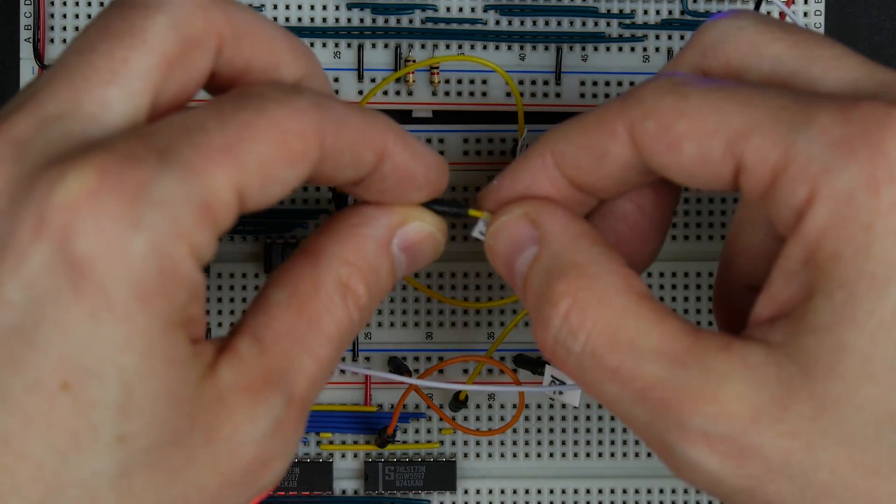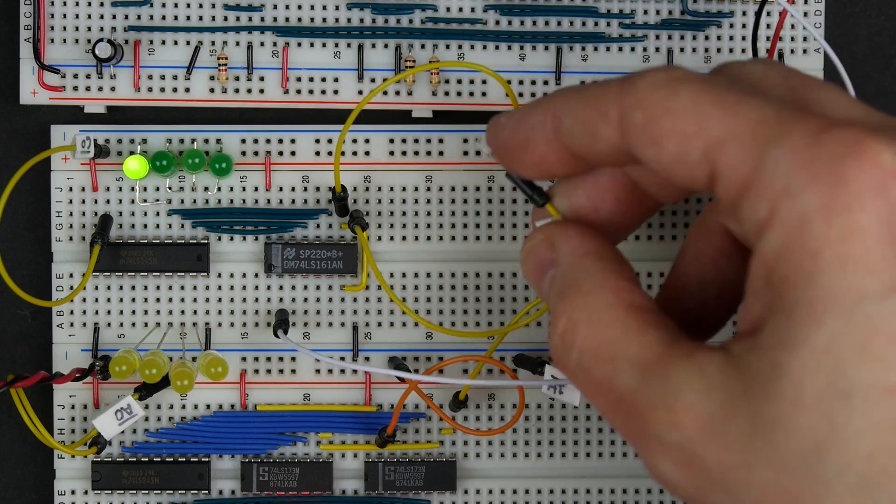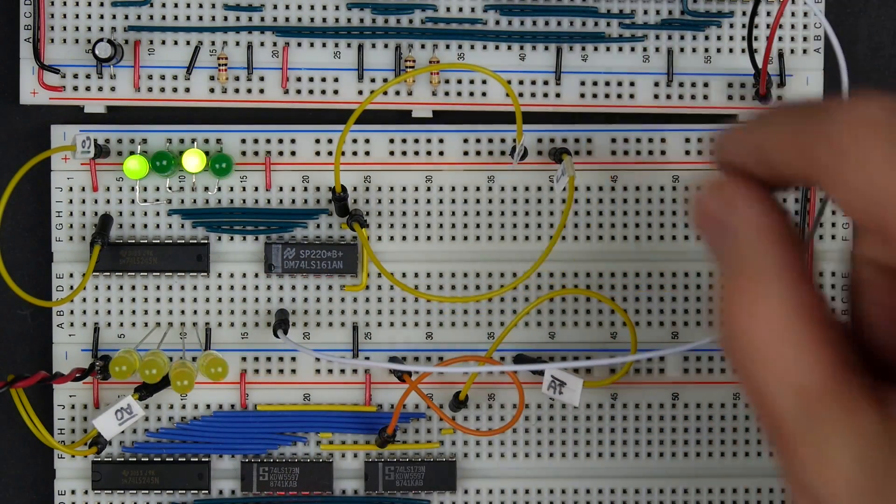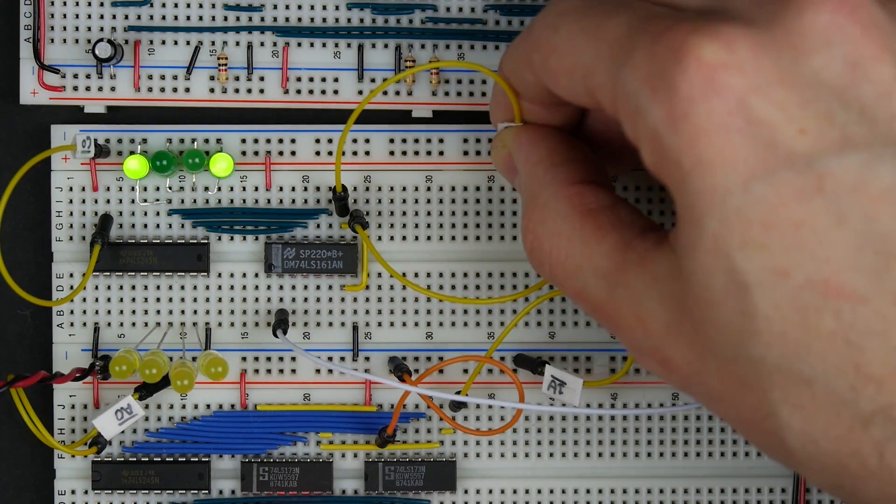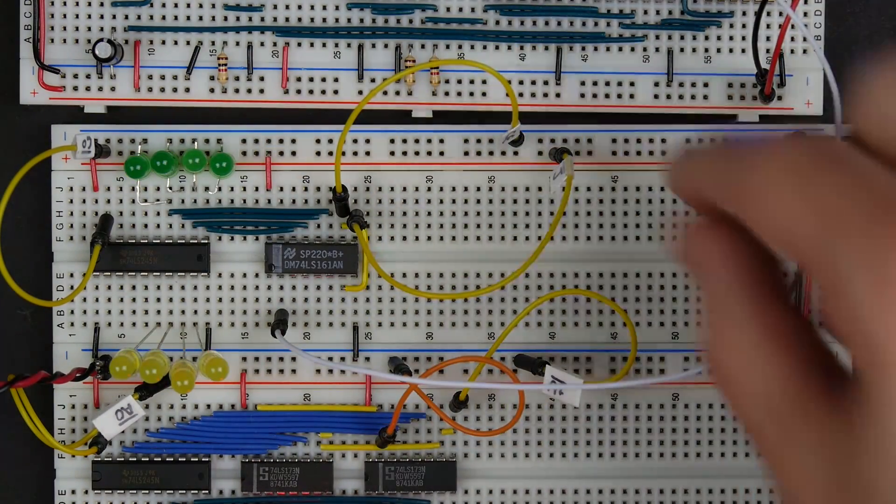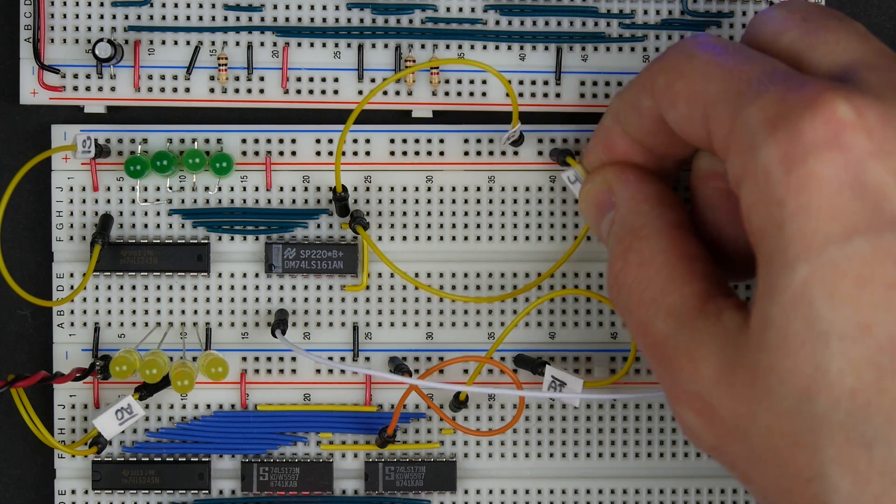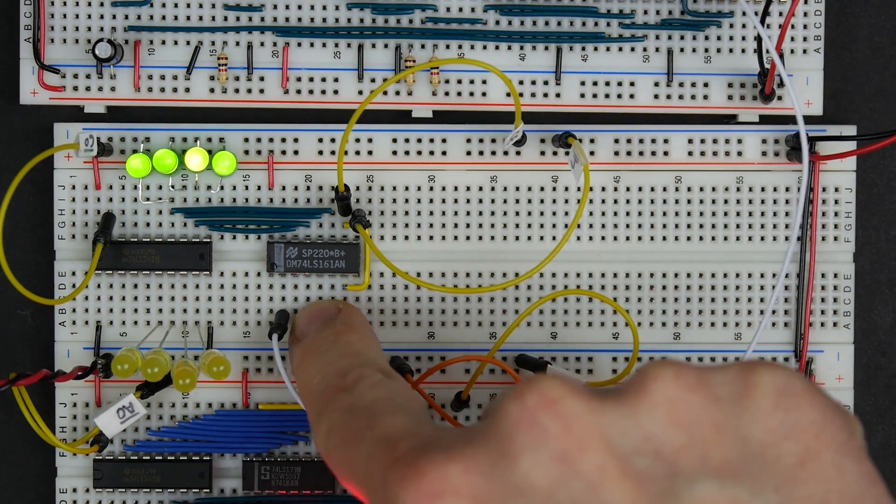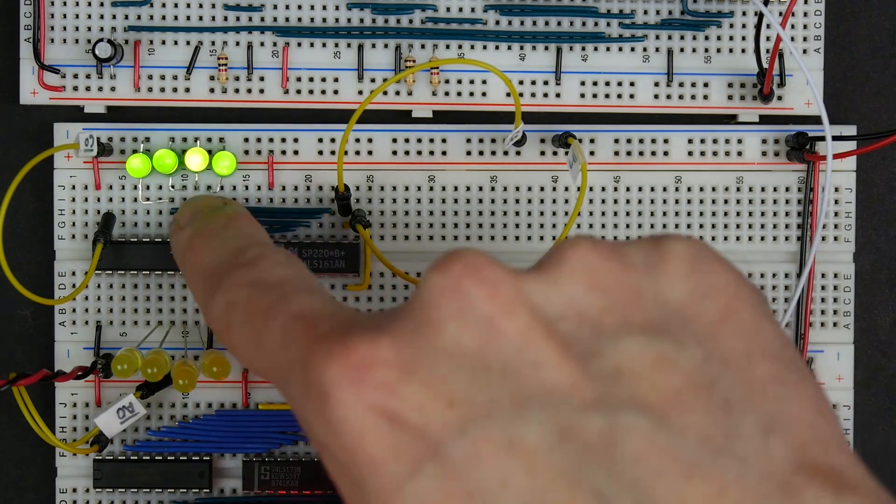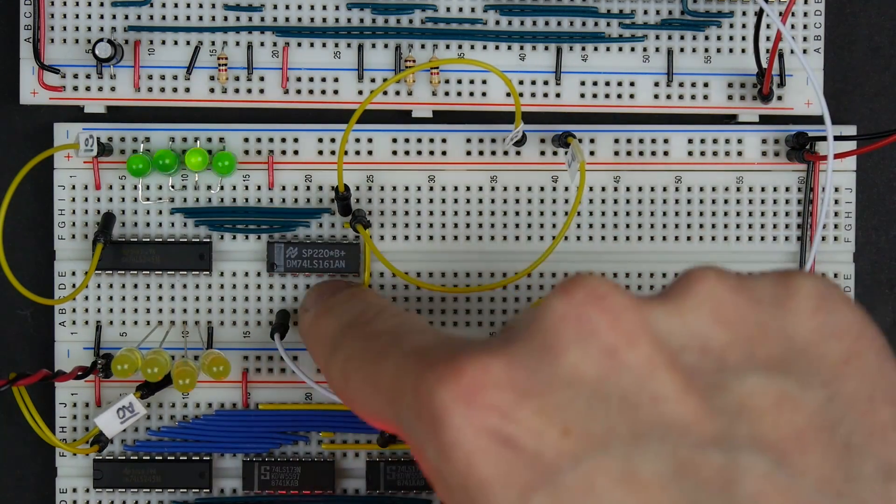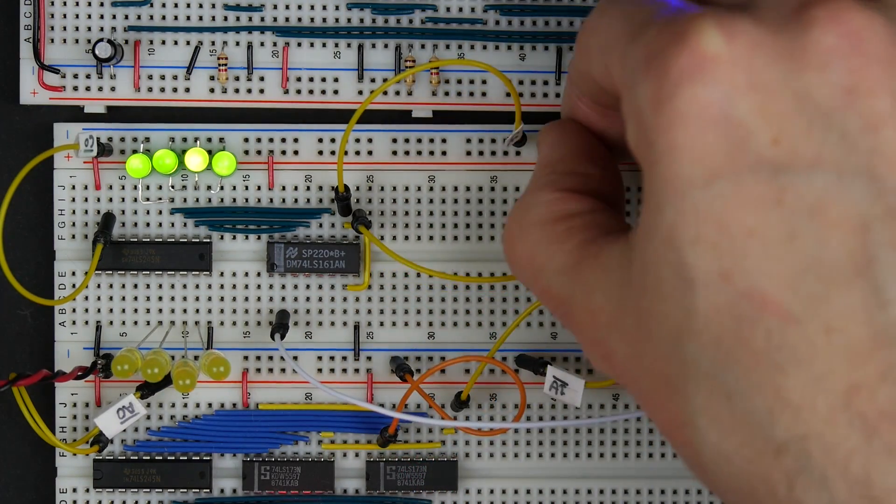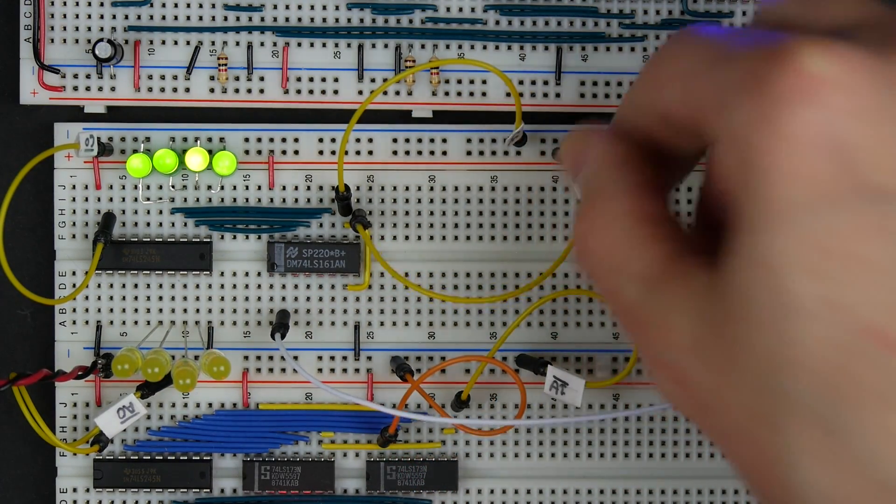That's our jump signal, and it's an inverted input. You can see it's got the little bubble there. Normally it would be high, so we'll tie it high. Then if we wanted to load a value in, we'd bring it low. If I turn off the counter enable and just leave it there, then if I bring my jump, if I take that low, that'll activate the jump and it should load whatever's coming in here. Of course, these aren't connected, so they default to high, and it looks like it's just loading that default of high for those four inputs that aren't connected. It looks like that jump is working.